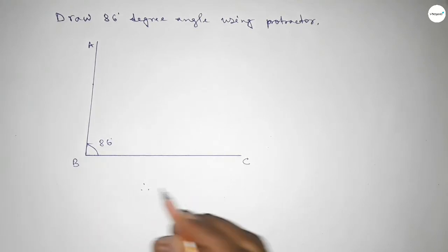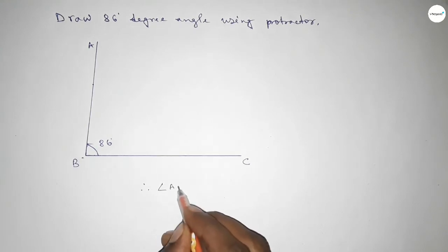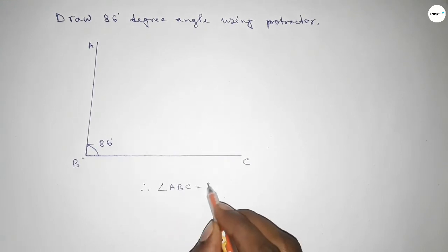So therefore, angle ABC equals 86 degrees. That's all, thanks for watching.